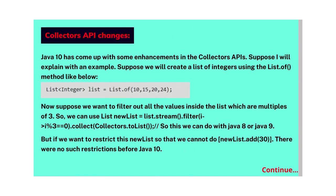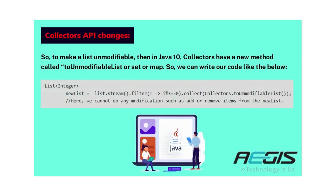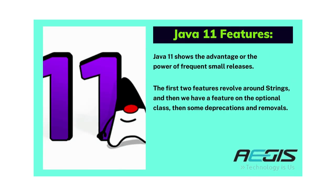Next is the Collectors API changes in Java 10. Java 10 comes with enhancements in the Collectors API. For example, we can create a list of integers using List.of(), then filter multiples of 3 using: List newList = list.stream().filter(i -> i % 3 == 0).collect(Collectors.toList()). This was possible in Java 8 or 9, but if we wanted to restrict newList.add(30) there were no such restrictions before Java 10. So to make a list unmodifiable in Java 10, Collectors has a new method called toUnmodifiableList(), toUnmodifiableSet(), or toUnmodifiableMap().